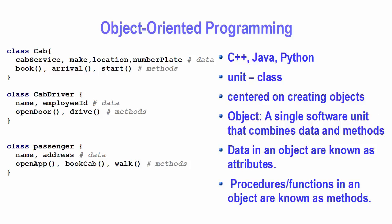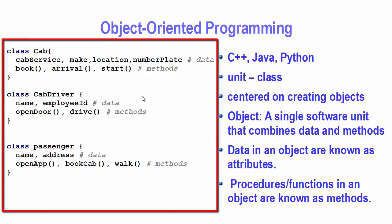Now let's look at the object-oriented approach. In object-oriented programming languages like C++, Java, or Python, the basic unit is class. Taking the same cab service example, OOP thinking depends upon the creation of objects. We can create different kinds of objects — for example, a class called Cab, a class for CabDriver, and a third class for Passenger. A class can represent any real-life object: a car, a motorbike, a book, an employee, or a person.